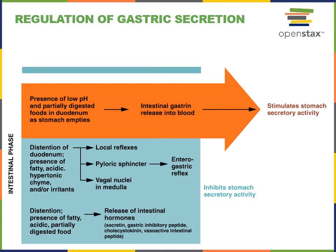The intestinal phase regulating gastric secretion involves an initial positive feedback mechanism followed by a negative feedback mechanism. Initially, as shown with the orange arrow, the presence of a low pH from chyme entering the duodenum, as well as partially digested foods releasing nutrients, activates chemoreceptors in the duodenum. This leads to activation of enteroendocrine G cells in the small intestine that release intestinal gastrin, which travels in the blood to the stomach and binds to receptors in the gastric pits to stimulate increased gastric juice secretion.